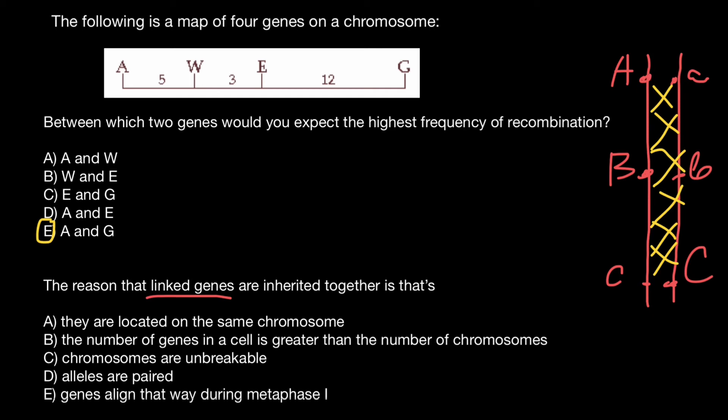And if genes would be on different chromosomes, then such genes would be inherited independently from each other. They're not going to be linked. Only those genes would be linked which are on the same chromosome. The correct answer, as you see, would be answer A. They are located on the same chromosome.